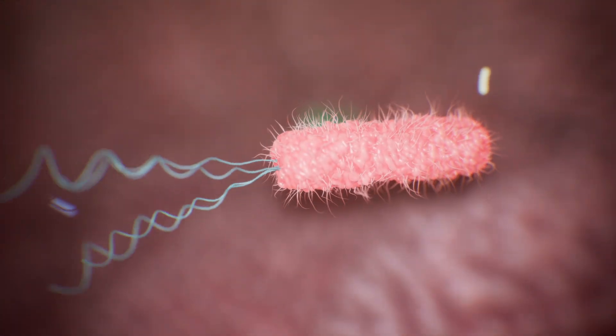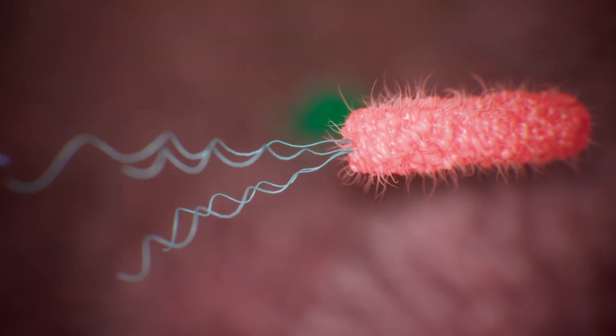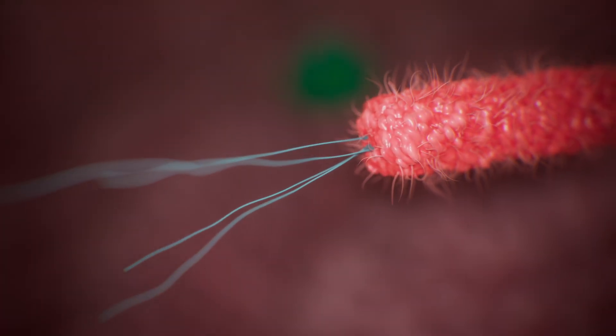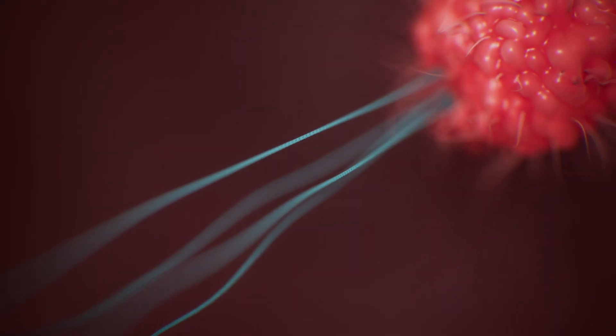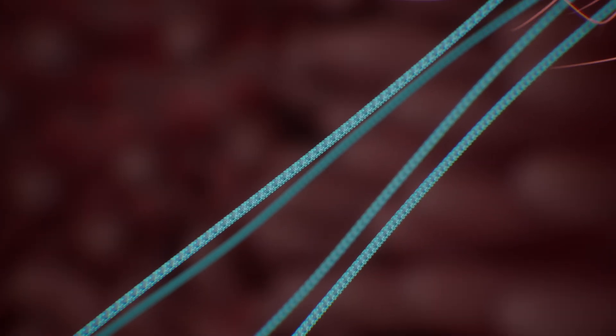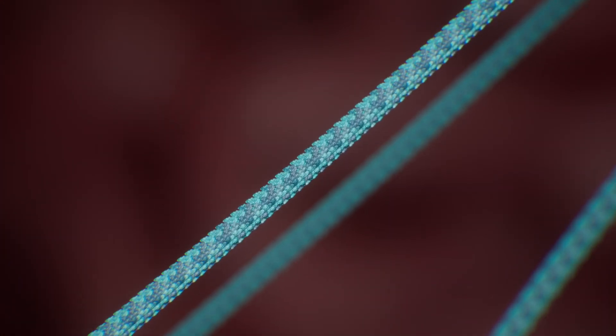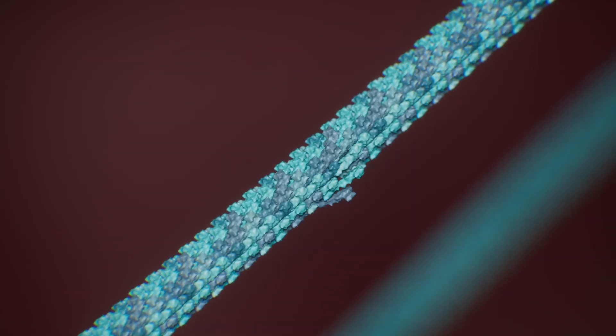Bacteria in the colon move around using their tails, known as flagella. Flagella are composed of various pattern proteins, with a key protein called flagellin, which is more abundant in the lumen when the host feeds.